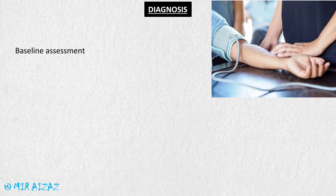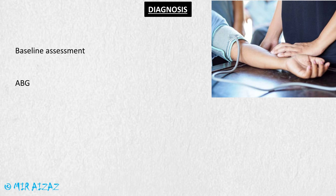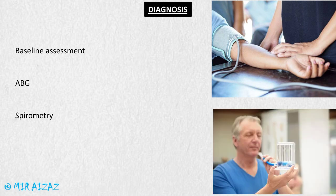To diagnose asthma, we first get a baseline assessment of the patient including vital signs and respiratory system assessment, and note the ABG (arterial blood gases) to know about the levels of oxygen, carbon dioxide, bicarbonate, and the pH of the blood. Spirometry is an easy way to check airways and lungs — the patient takes a deep breath and exhales into a hose attached to a spirometer, which records how much air is blown and how quickly.